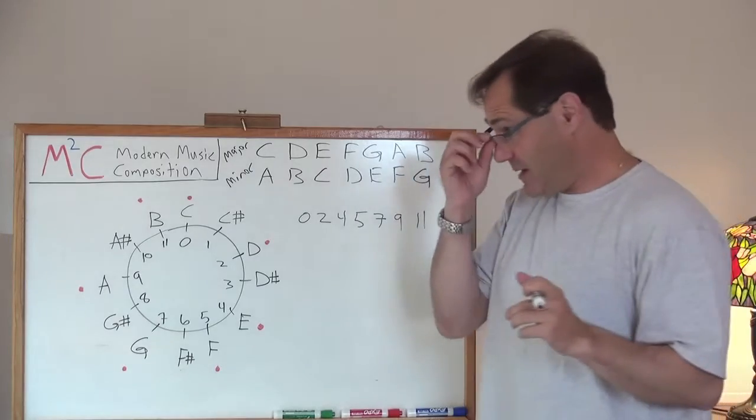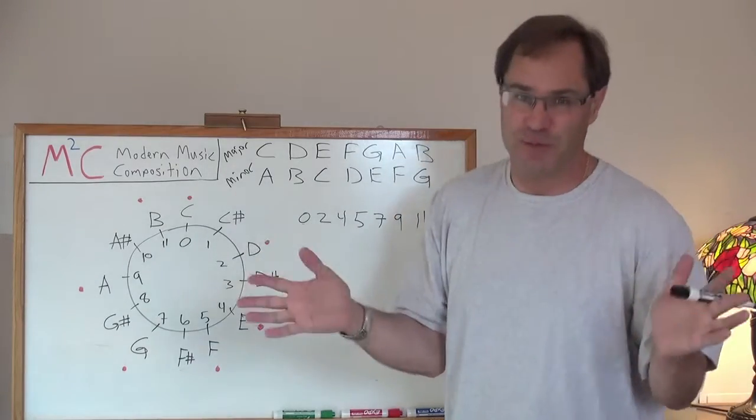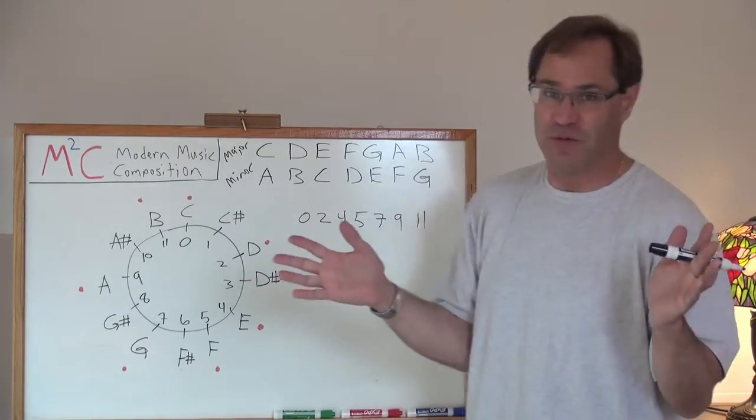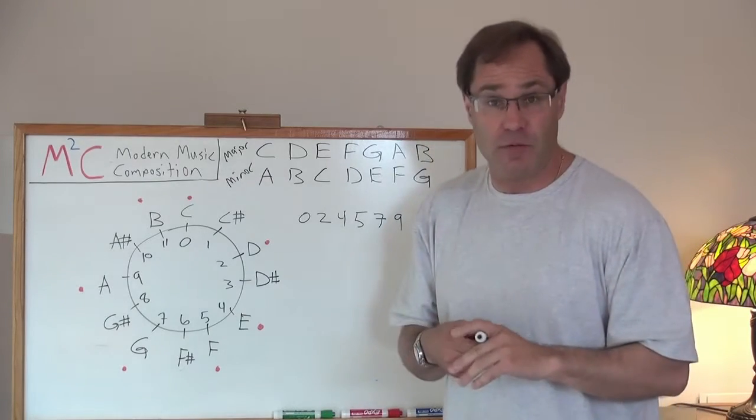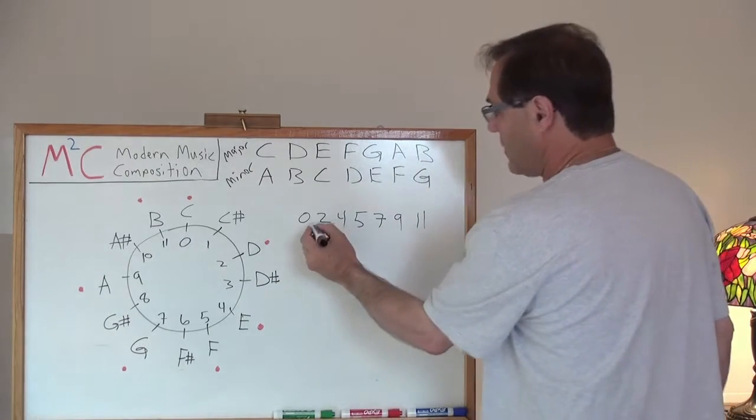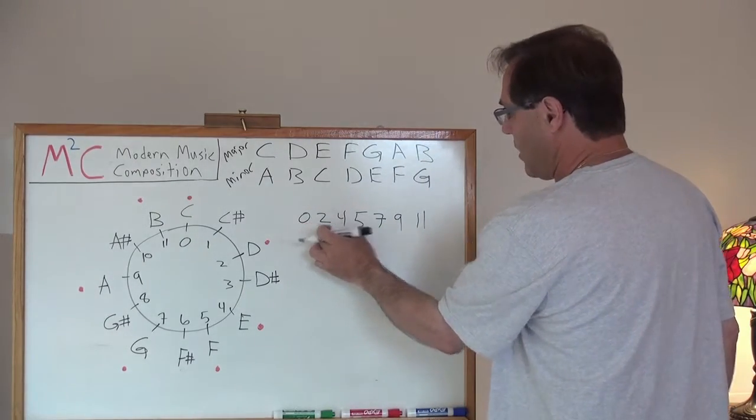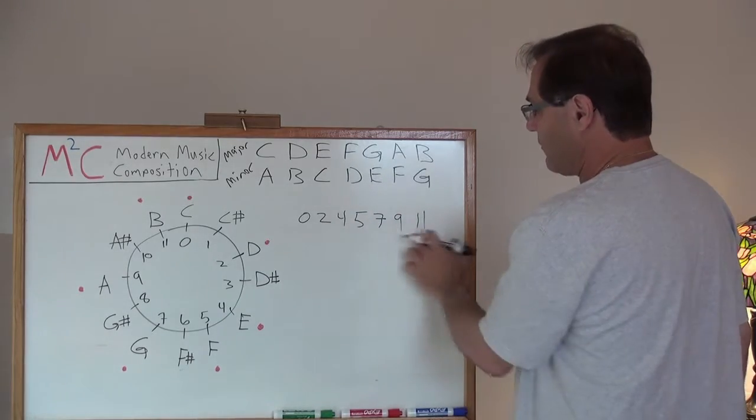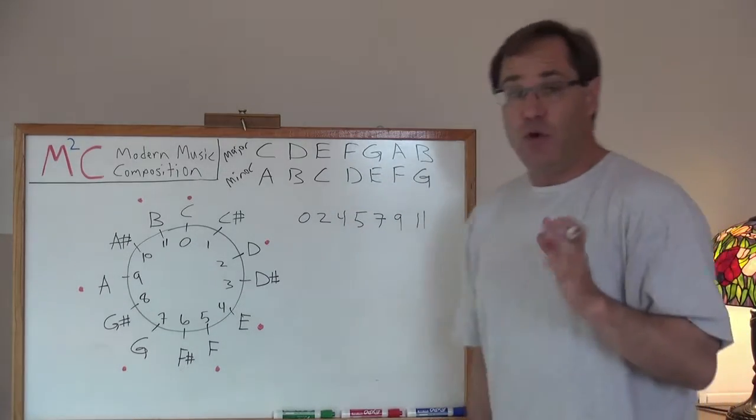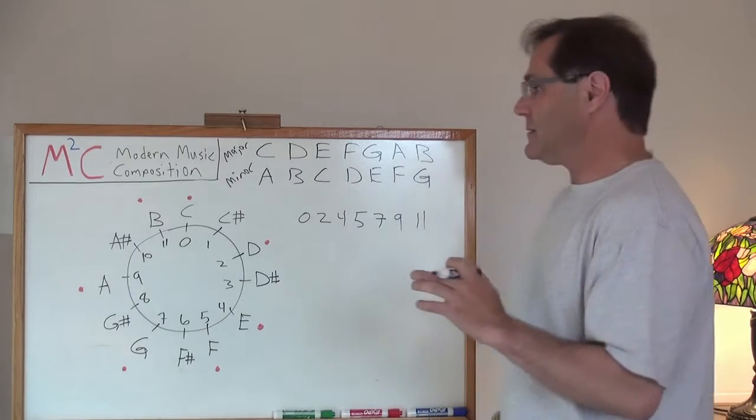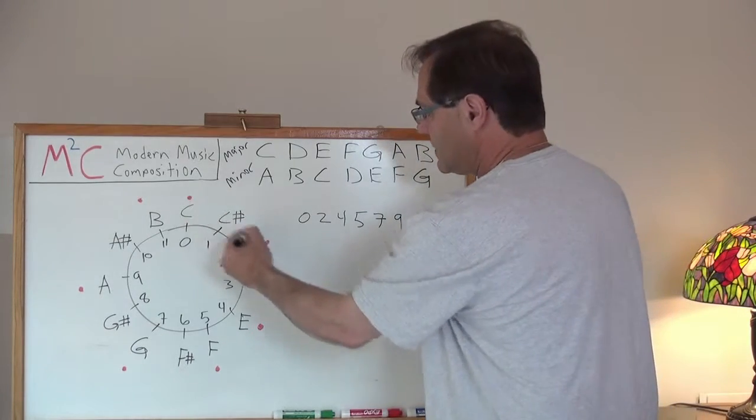Well, the first thing we do is we have to calculate what's called the normal form. Another word, the normal form. Well, what is the normal form? I've written out here from C all the way to B in number format. Turns out, the normal form is taking this circle, this clock diagram, and traversing it in a manner in which it takes me the least amount of space to do and is in its most compact form.